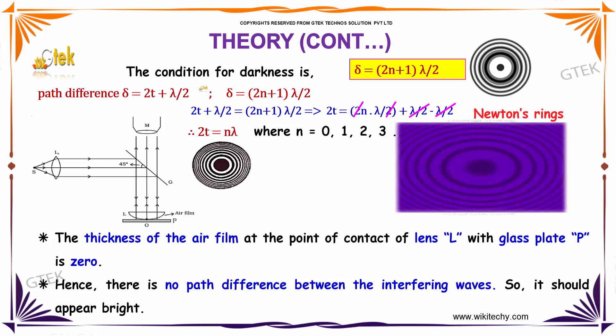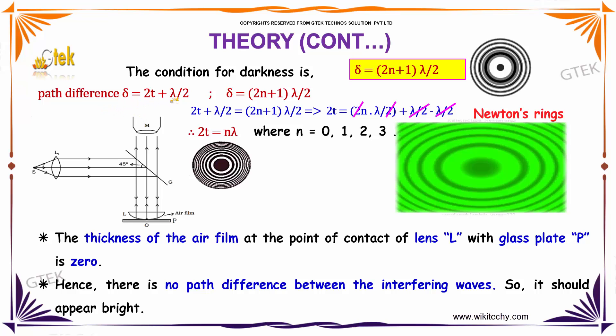The condition for darkness is: path difference δ = 2T + λ/2 = (2n+1)λ/2.